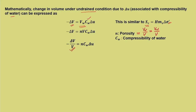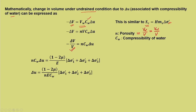So delta U equals (1 minus 2mu) divided by (n times E times C_w) times the stress terms. For triaxial condition, which is a very prominent lab condition, we have delta sigma_2 dash equals delta sigma_3 dash, giving delta sigma_1 dash plus 2 times delta sigma_3 dash. Delta U equals (1 minus 2mu) divided by (n times E times C_w). We can replace effective stresses by total stresses: delta sigma_1 minus delta U plus 2 times (delta sigma_3 minus delta U).